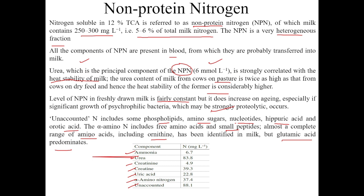In summary, non-protein nitrogen refers to substances present in milk that contain nitrogen but are not derived from proteins. They are present in the filtrate obtained by treating milk with 12% TCA. The nitrogen soluble in 12% TCA is defined as NPN. Always remember that urea is the principal component of NPN, at approximately six millimoles per liter.